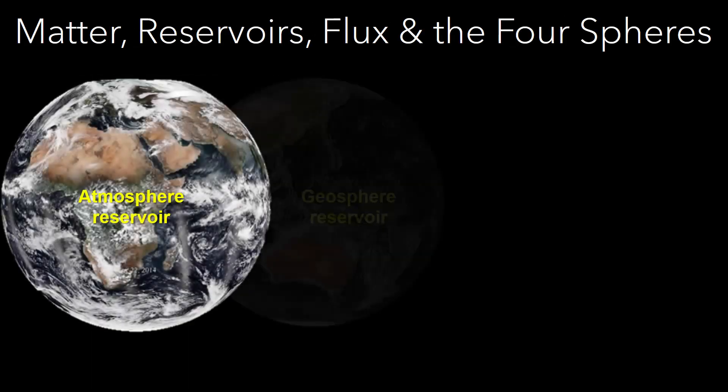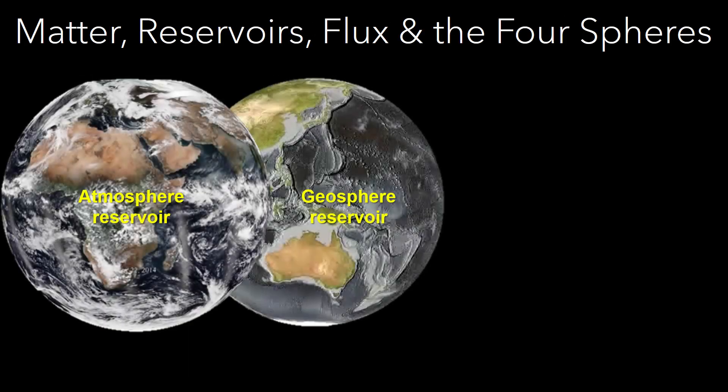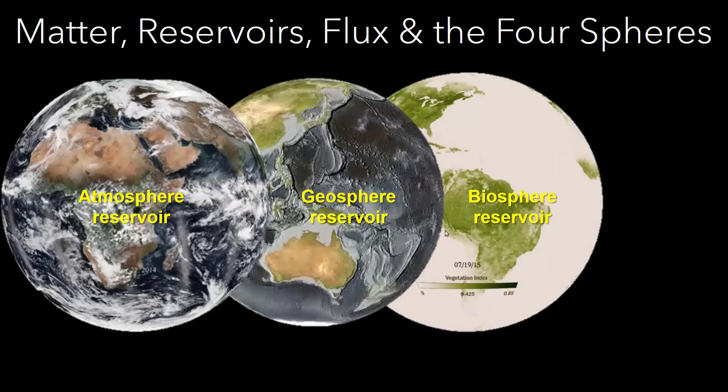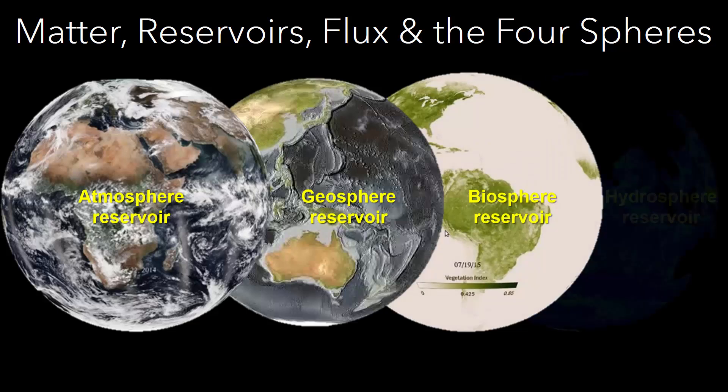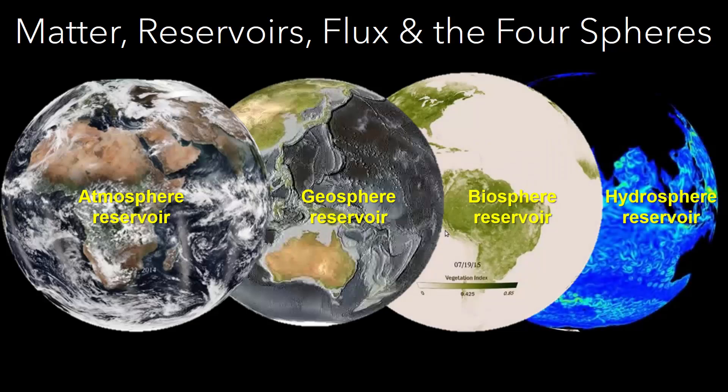The Earth's system can be characterized by the flow of matter through reservoirs in each of the major spheres. We will describe each part of the system, the relationships between the parts, and how those relationships may change over time. To help us do this, we will take a closer look at how different forms of a key element, carbon, moves among the components of the Earth's system.